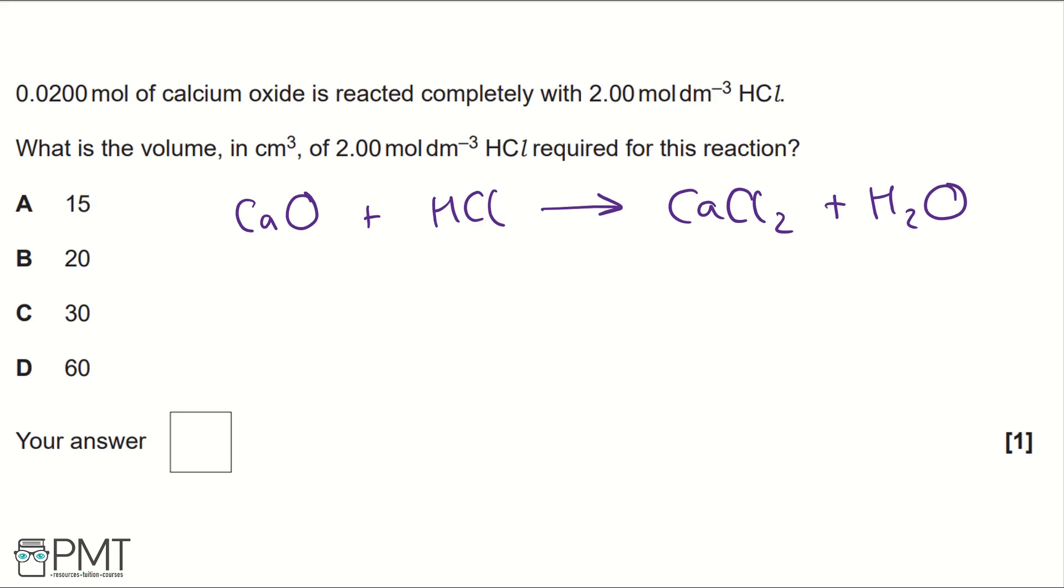If we balance the equation we need a 2 in front of our hydrochloric acid in order to balance our hydrogens and our chlorines because there are 2 used in our products.